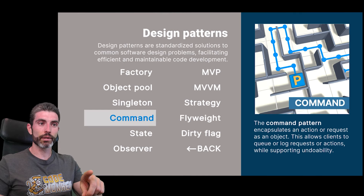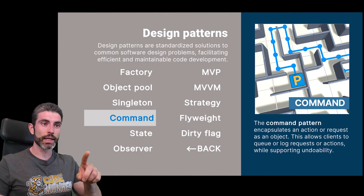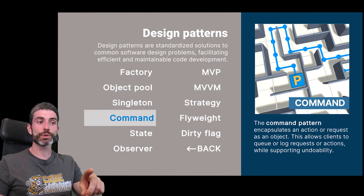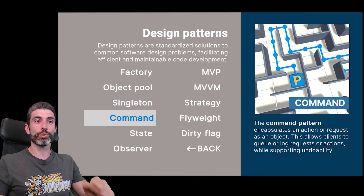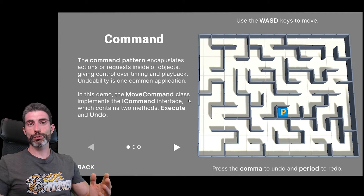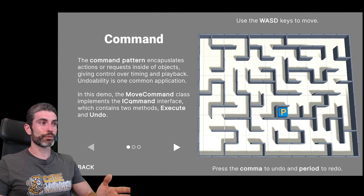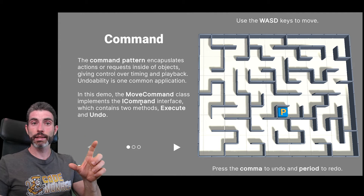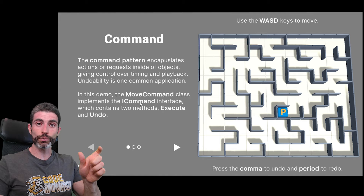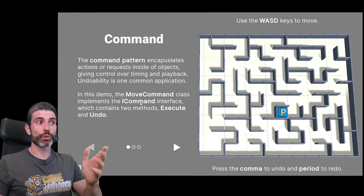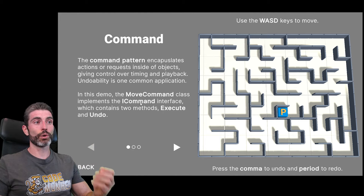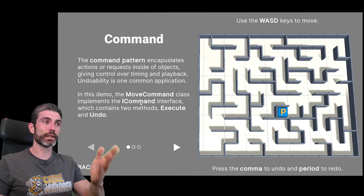Then for the command pattern: this one encapsulates an action or request as an object, which allows clients to queue or log requests or actions while supporting undoability. So this is where you define some kind of command — possibly with an interface — and that command can store some kind of logic. Then you can execute that logic whenever you want. One common example for this pattern is building an undo system.